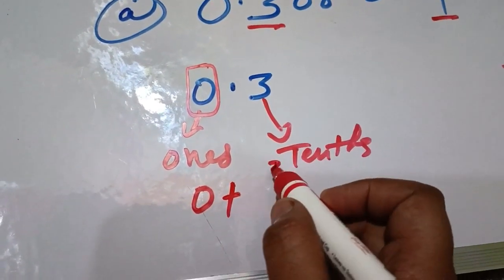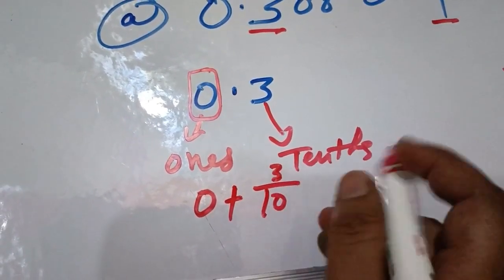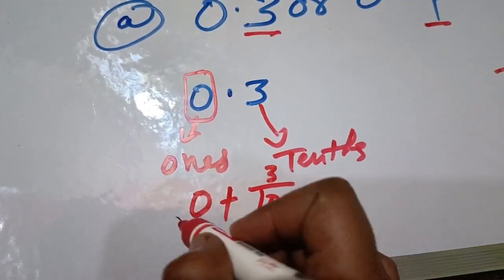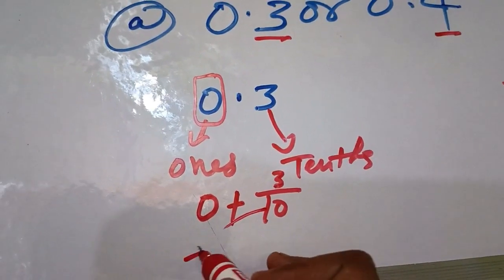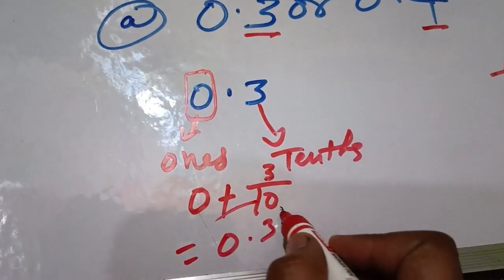Then 3 upon 10, because it is tenths. So this is your 0 plus 3. Now, this is the thing - we will change it to decimal form. So this is 0.3.